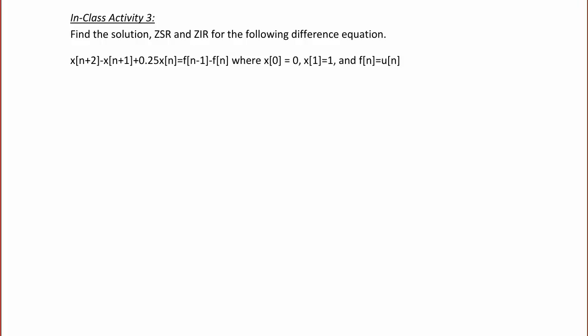Now let's look at the final in-class activity for today's lecture. Find the solution, zero state response, and zero input response for the following difference equation: x(n+2) - x(n+1) + 0.25x(n) = f(n-1) - f(n), where x(0) = 0, x(1) = 1, and f(n), the input, equals the step u(n). The first thing we're going to do